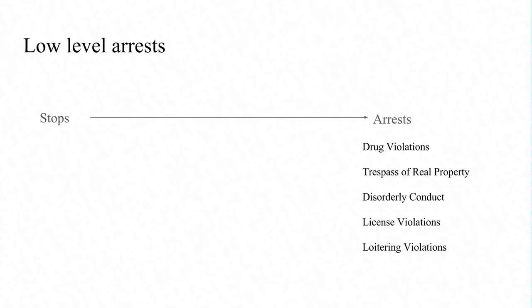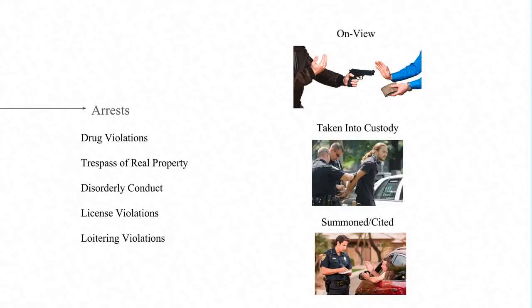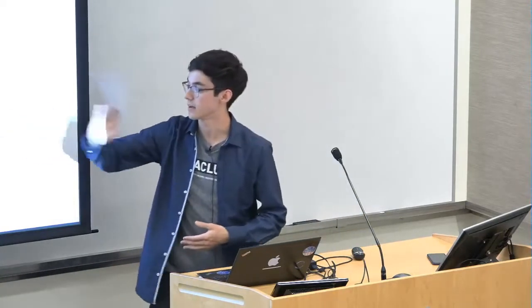Low-level arrests can emerge from stop and frisks and from general broken windows policing. Examples include drug violations, trespassing, disorderly conduct, loitering, and licensing violations. In arrest data there are three types of entries — on-view arrests where an officer witnesses a crime, taken-into-custody arrests where an officer finds someone with an outstanding warrant, and summoning or citing. These probably shouldn't strictly be called arrests since they also include summons and citations.